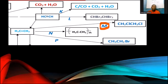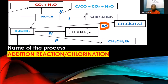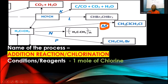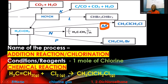Process M — starting from an alkene going to a product with two chlorine atoms — is chlorination, another addition reaction (specifically halogenation). One mole of chlorine is needed, and it produces 1,2-dichloroethane, which is more stable than 1,1-dichloroethane. The chemical equation shows chlorine gas reacting with ethene in an addition reaction.